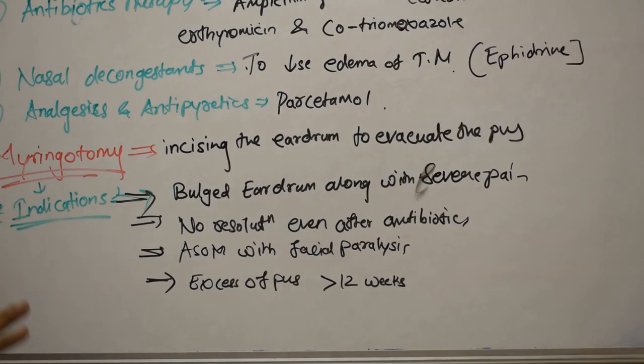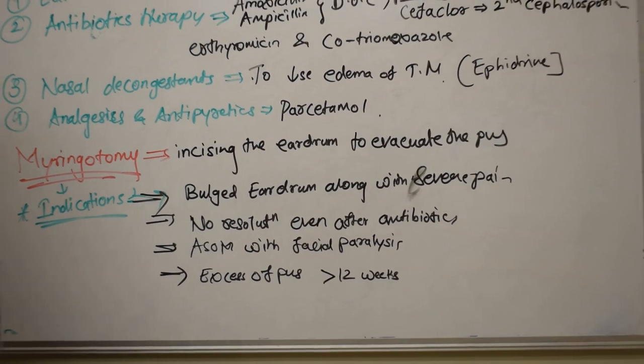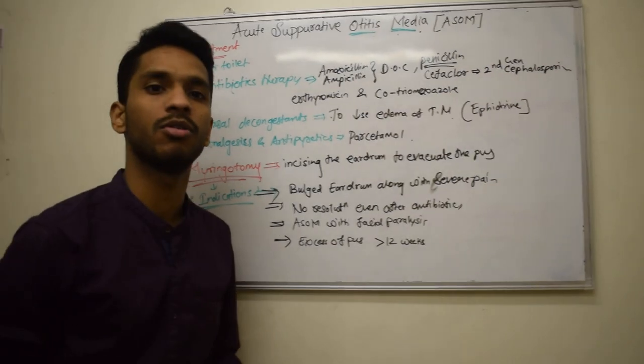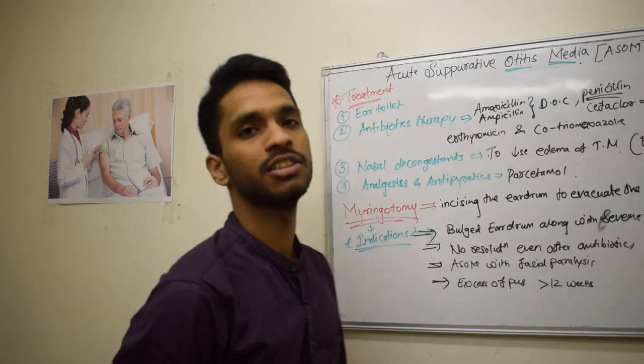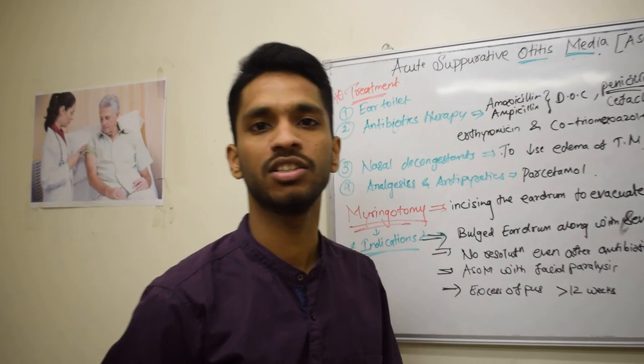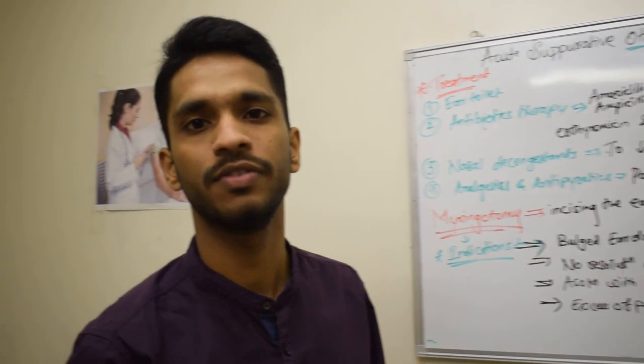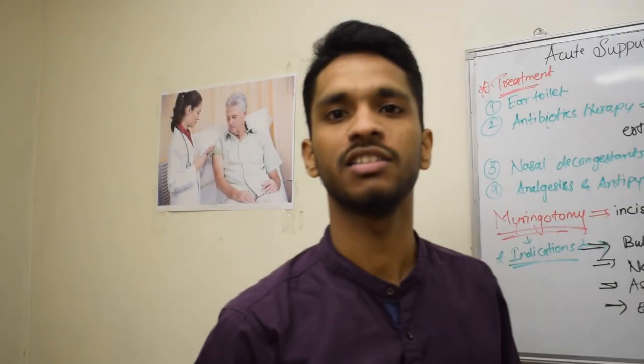So these are the treatments — ear toilet, antibiotic therapy, nasal decongestants like ephedrine to decrease edema, paracetamol for pain and fever, and myringotomy if other treatments are not working. That covers everything about acute suppurative otitis media. Thanks for watching — please like and subscribe to MediSimplified.